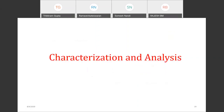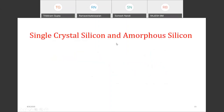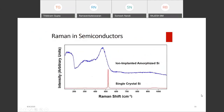After discussing the instrumentation, I will move towards characterization and analysis of the sample. I have chosen single crystal silicon and amorphous silicon. This is the Raman spectrum for a semiconductor showing ion-implanted amorphous silicon and single crystal silicon. Silicon deposited on glass or silicon carbide is widely used in manufacturing of photovoltaic cells, and both the proportion and distribution of amorphous and crystalline silicon are critical for performance, making Raman spectroscopy an ideal technique for this application.